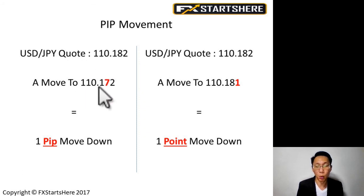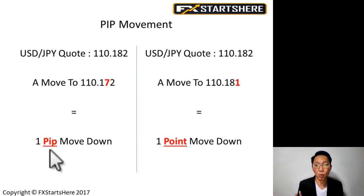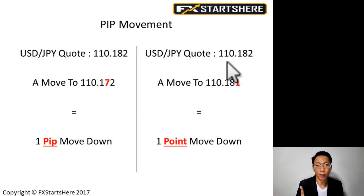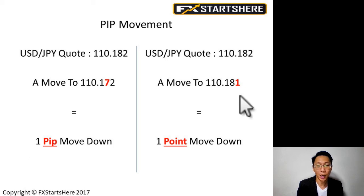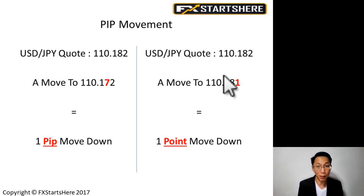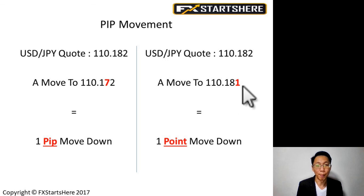For the Japanese Yen pair example: USD/JPY, assuming the quote price is 110.182 and the price moves to 110.172, we say it has moved one PIP down. If the price moves from 110.182 to 110.181, we say it has moved one point down. So for Japanese Yen pairs, the second decimal is one PIP and the third decimal is one point.